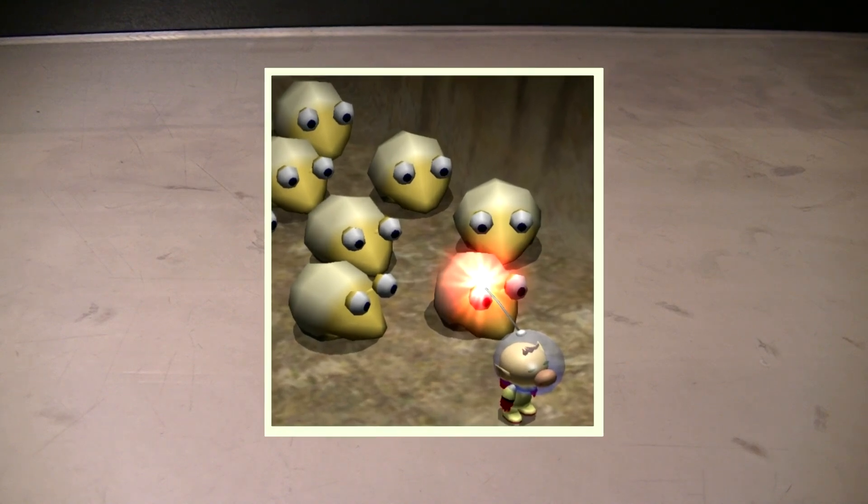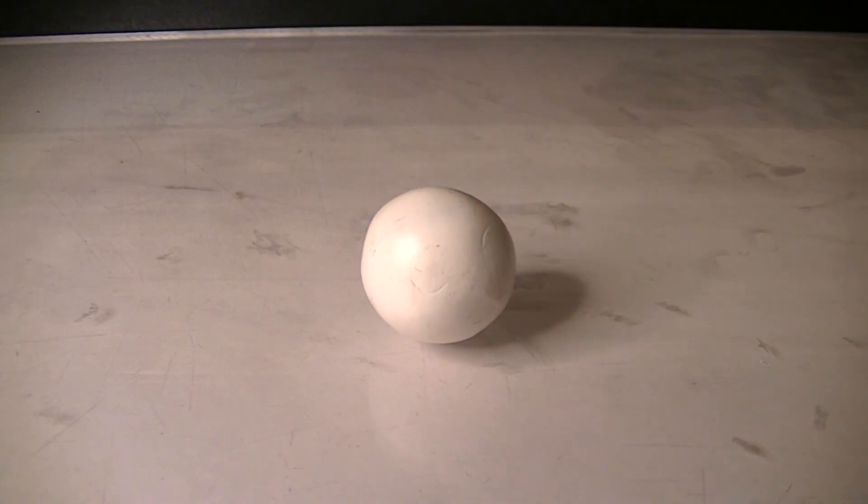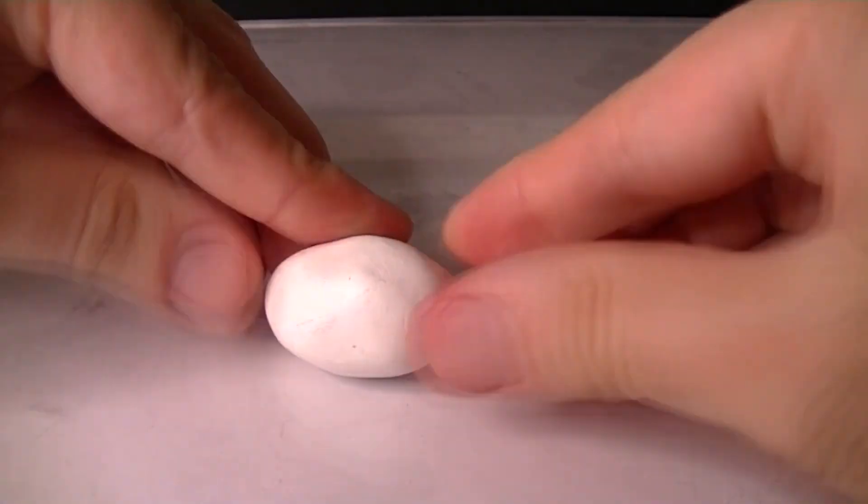Alright, today we're going to be making Bulborb Larva with Polymer Clay. We're going to start by getting a ball of white clay and molding it into a kind of teardrop shape, which is pretty much the entirety of his body.